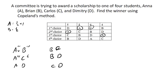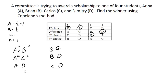Next we have A versus D — D wins that one, so D gets one point. Quickly going through the rest: D gets a point in one comparison, C gets a point, B gets a point, and C gets another point.